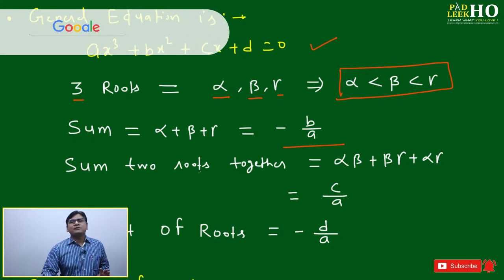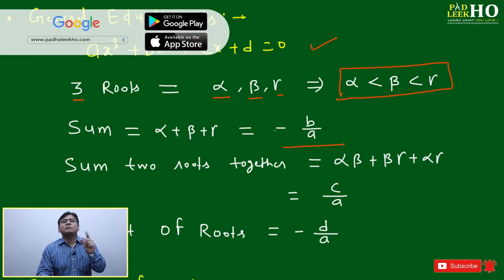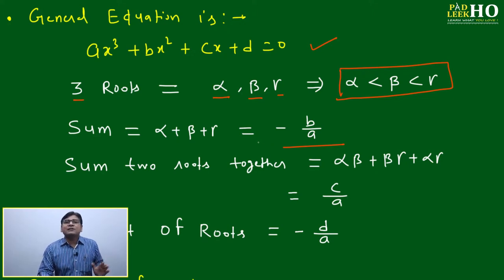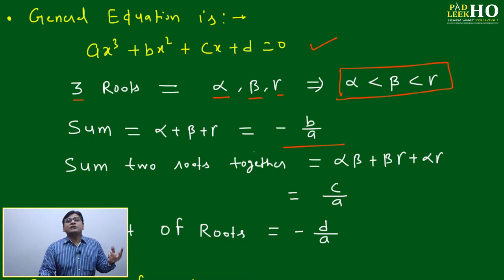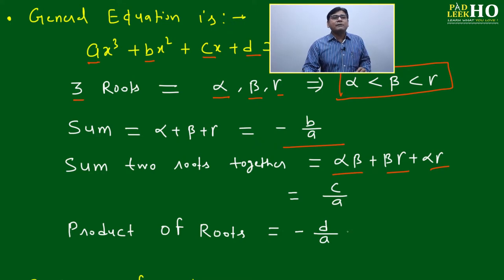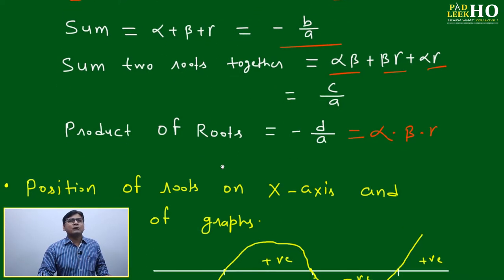Using Vieta's formulas: the sum of roots alpha + beta + gamma = -b/a. The sum of products of roots taken two at a time — alpha·beta + beta·gamma + alpha·gamma = c/a. The product of all roots — alpha·beta·gamma = -d/a. Here a, b, c, d are the coefficients of the different terms of the cubic equation.